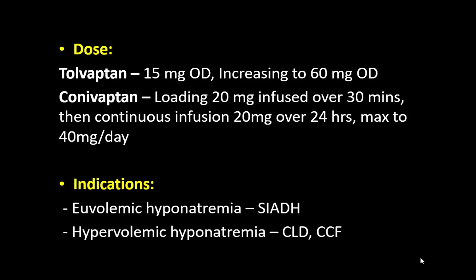The IV form has a loading dose of 20 mg infused over 30 minutes, then a continuous infusion of 20 mg over 24 hours. The maximum dose is 40 mg per day. Vaptans are indicated only in euvolemic and hypervolemic hyponatremia — they should not be given in hypovolemic hyponatremia.